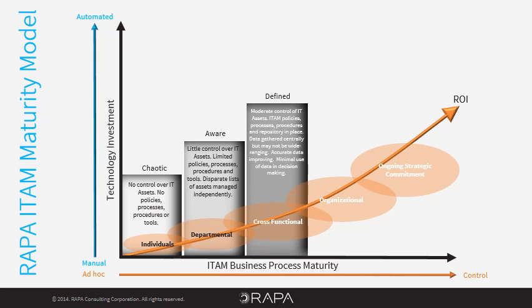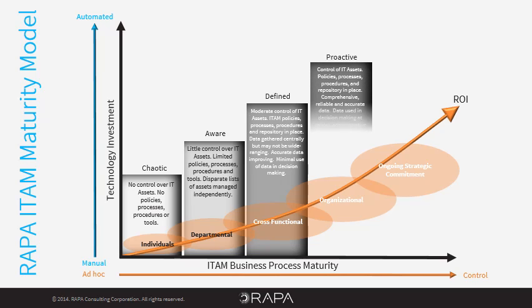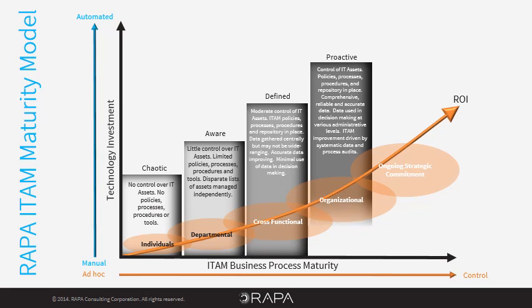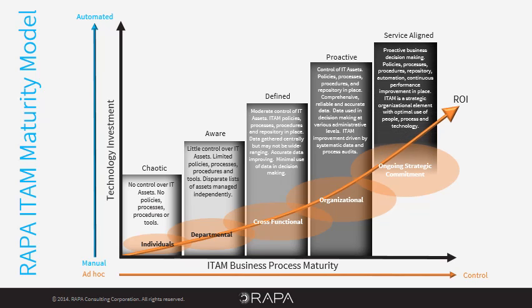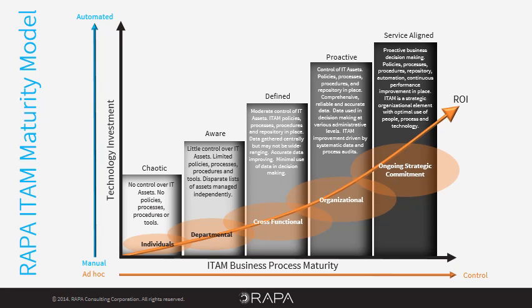As a result of comprehensive and enforced policies, processes, and procedures, data is now accurate. Executive management increases its funding in ITAM because it sees the benefits of the investments made to date and focuses on ongoing efforts for continuous improvement. At the highest level of maturity, IT asset management is aligned with the business. There is ongoing commitment to people, process, and technology that supports the reporting of accurate data through automation, therefore supporting the strategic decision-making process.